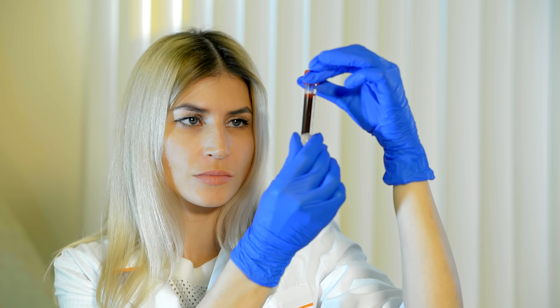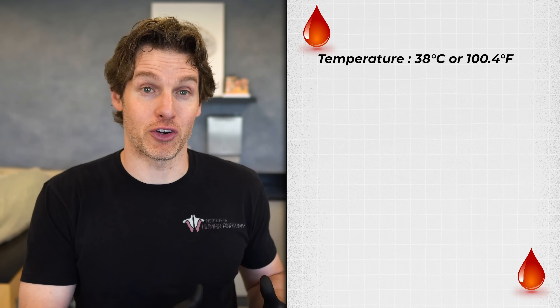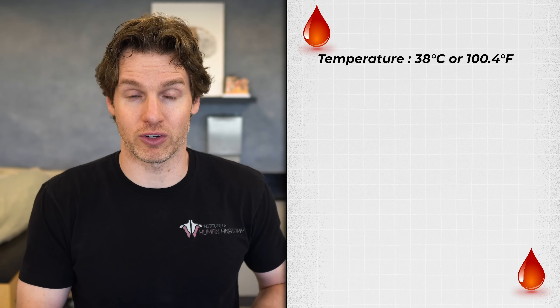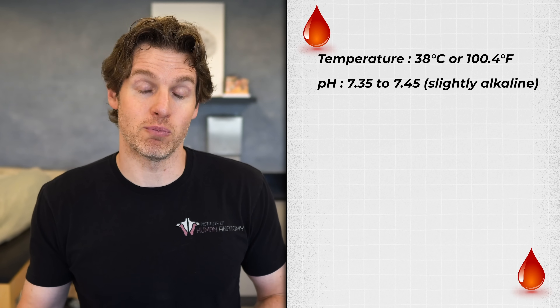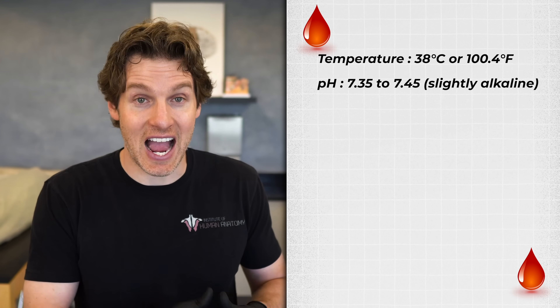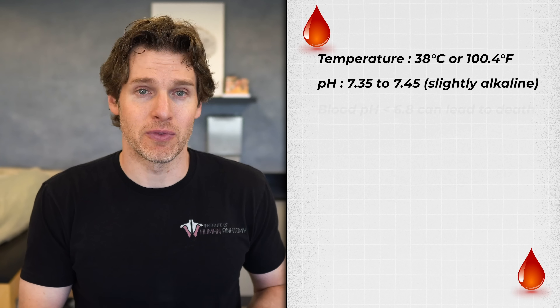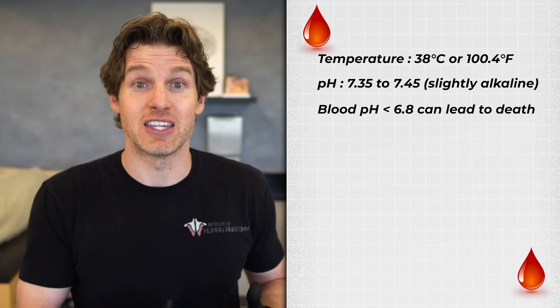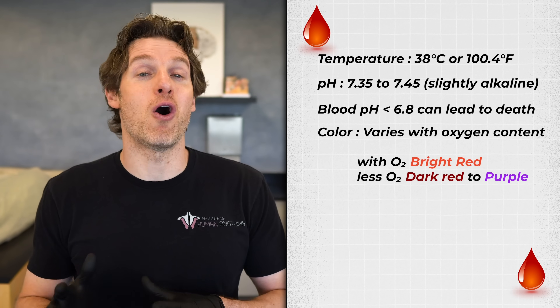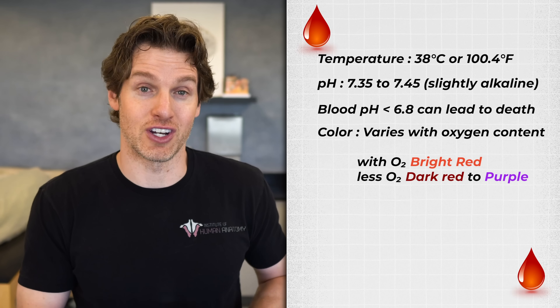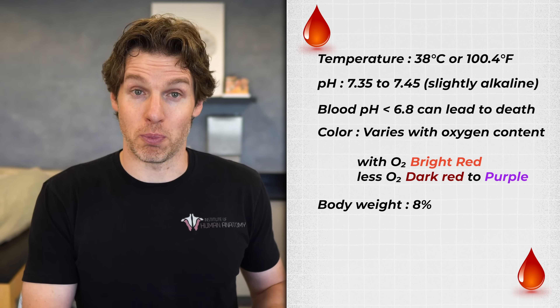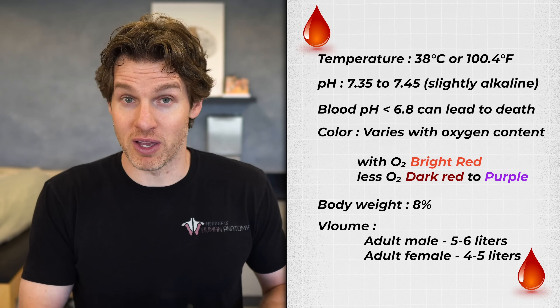So clearly there are many vital functions of blood, but what are some of its physical characteristics? Blood is denser and more viscous than water, flowing more slowly through the body. It has a temperature of about 38 degrees Celsius or 100.4 degrees Fahrenheit, and it has a slightly alkaline pH of 7.35 to 7.45, which needs to be tightly regulated — deviations can be quite serious. If someone's blood pH went to 6.8, that would likely result in death. Blood color also varies: it's bright red when oxygenated and dark red to a purplish color when deoxygenated.